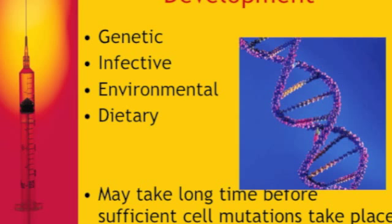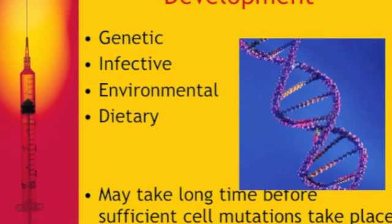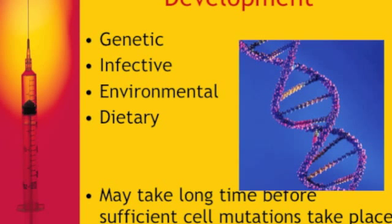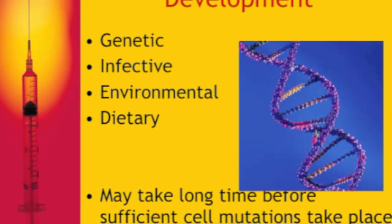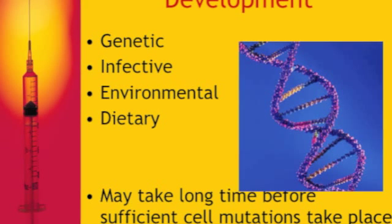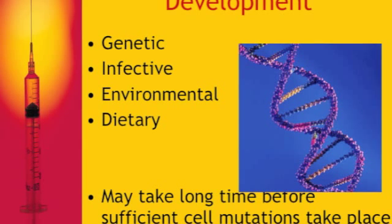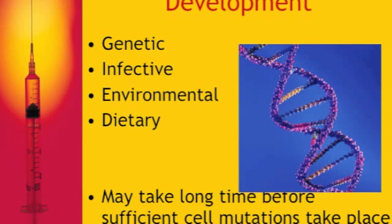Infective agents that can lead to cancer include genital herpes, HPV (human papillomavirus) which can lead to cervical cancer — driving the push for vaccines in young girls and boys, as it has been shown HPV prevention also reduces rectal cancer. Hepatitis B and hepatitis C can lead to liver cancer. Helicobacter pylori, found in the stomach, can lead to gastric cancer. So infective agents are also an influence.